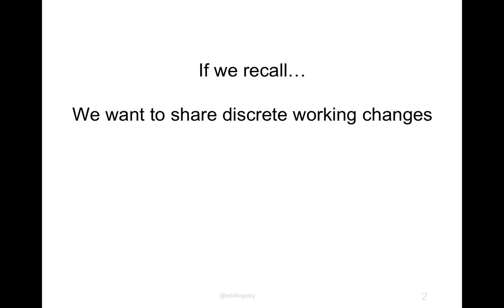Going right back to the beginning: as we're working as a team developing software, we want to share discrete working changes. We don't want to share the brokenness in the middle while we're still editing things, where things don't necessarily compile and the tests don't pass. If we're going to go from one snapshot, make some changes, and produce another working snapshot, how are we going to know that we've got a working snapshot? We need some tests — not just that this compiles, but that this does what you think it does.